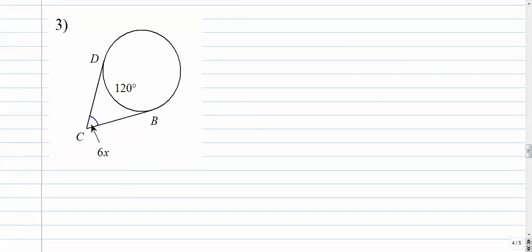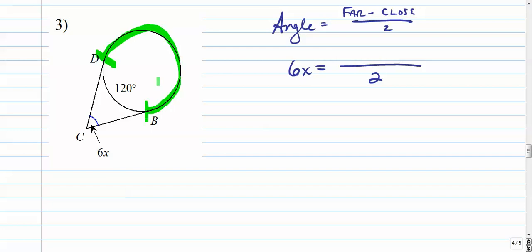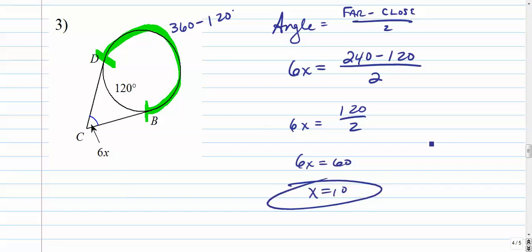Number three. A little bit of algebra here. Let's go angle equals the faraway arc minus the close arc over 2. 6x is equal to the faraway arc. I'm not really even sure, so we have to use the same idea. Alright, the faraway arc is 360 minus the other arc. So that's 240 minus 120 over 2. 240 minus 120 is 120 itself, so 6x equals 60, x equals 10.